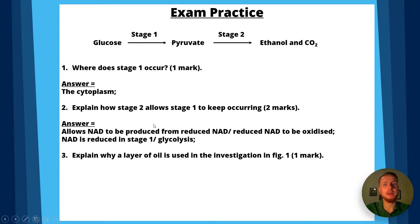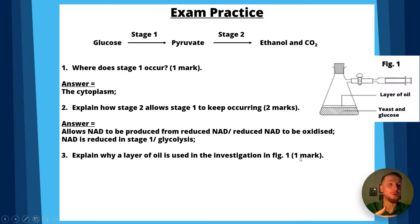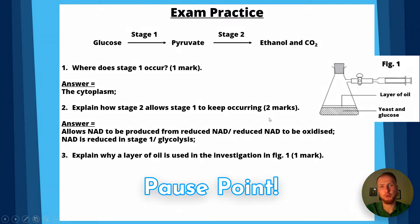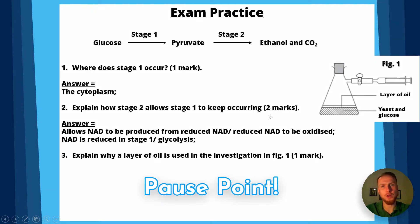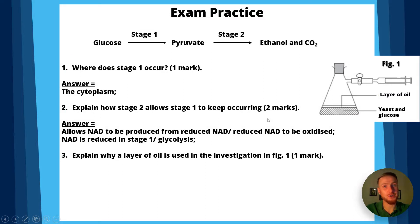Question 3: explain why a layer of oil is used in the investigation shown in figure 1. We can see a gas syringe, a bunged conical flask containing yeast and glucose, with a layer of oil above the mixture. The answer: the oil prevents oxygen from being absorbed or taken up by the yeast, ensuring anaerobic conditions.